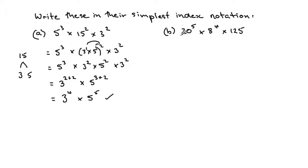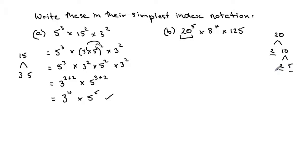Now let's look at part b. 20 can be broken down using a factor tree: 2 times 10, and 10 breaks down into 2 times 5. We stop there because we have a product of prime factors: 2 times 2 times 5. So 20 to the power of 5 is written as 2 times 2 times 5, all to the power of 5.